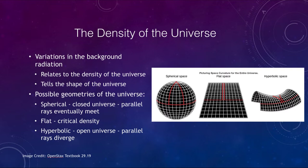There are three possible geometries for the universe. First, a spherical or closed universe where parallel rays will eventually meet. Second, a flat universe where parallel rays will go on forever. Third, a hyperbolic open universe where parallel rays will diverge and get further apart over time. We have to look at these to try to understand what the actual shape of the universe is.